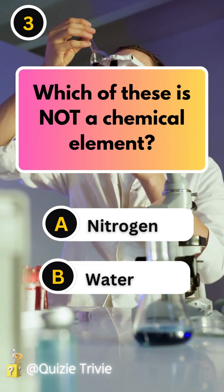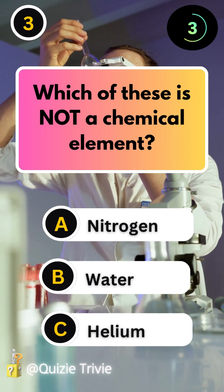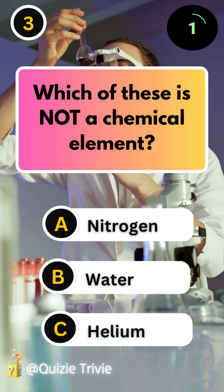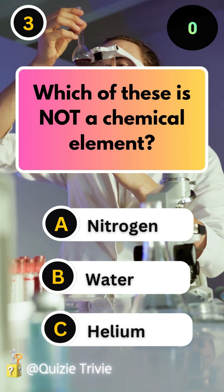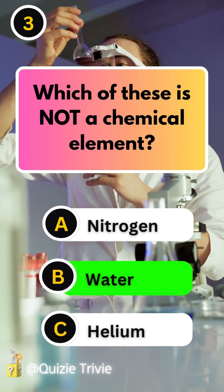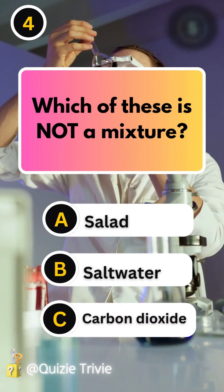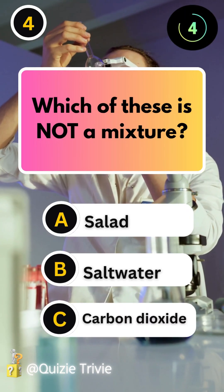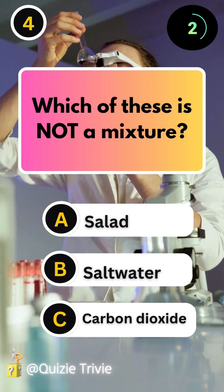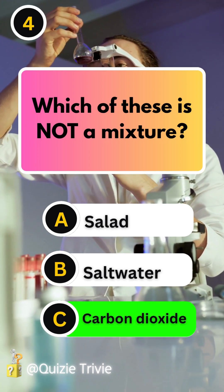Which of these is not a chemical element? Water. Which of these is not a mixture? Carbon dioxide.